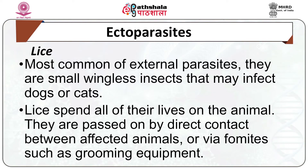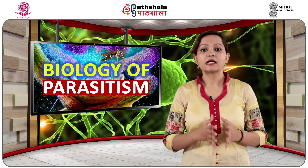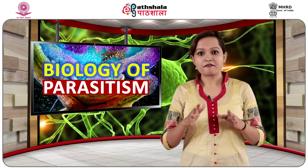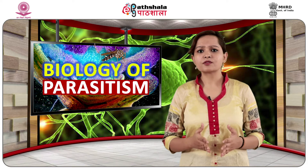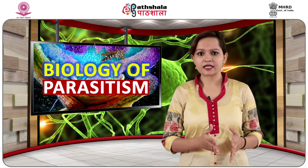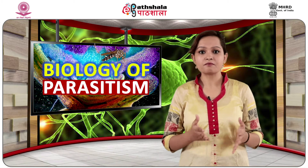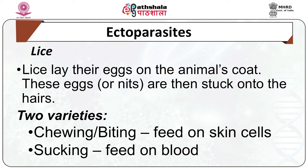Now we come to lice. They are ectoparasites on birds and mammals. They have a dorso-ventrally flattened, reduced body and lack wings. They possess well-developed legs for attachment to the hair or feathers of the host. Lice are parasitic throughout their life and cannot survive in the absence of a host. Usually they require one host for completion of their life cycle. The adult female glues eggs onto the feathers or hair of the host. Transmission occurs by direct contact when hosts meet for mating, brooding, etc.